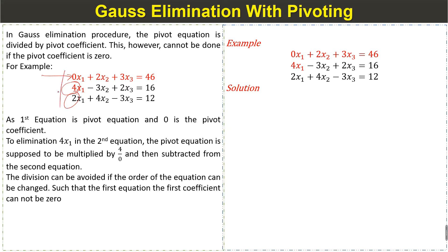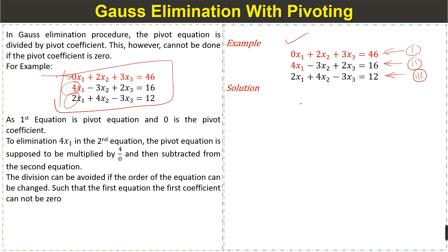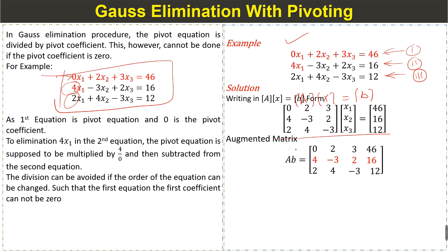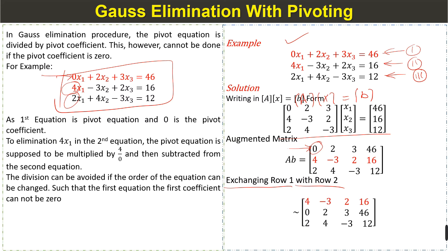We now solve an example with pivoting and then apply the Gauss elimination method. We have a system of three equations — the first is the pivot equation, the second, and the third. We write it in the form Ax = B and form the augmented matrix. We can see that the first pivot coefficient is 0, so we perform pivoting by exchanging row 1 with row 2. Now the pivot element is non-zero.